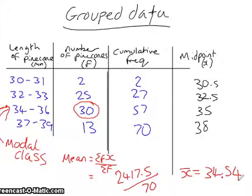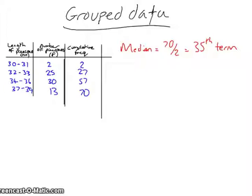To find the median, we interpolate. To do this, first of all we have to find out which term is the median. So we do 70 over 2 to get the 35th term.